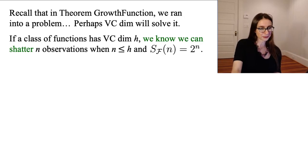So if a class of functions has VC dimension H, we know we can shatter N observations as long as N is less than or equal to H, right? This is just by the definition of VC dimension. The VC dimension is you can shatter any number of points up to that number of VC dimension.